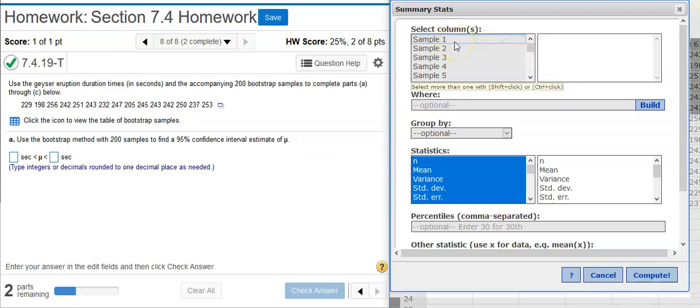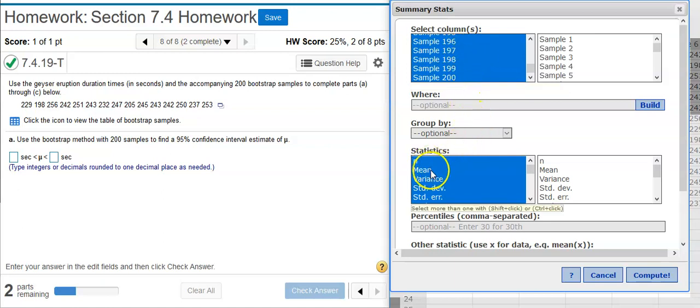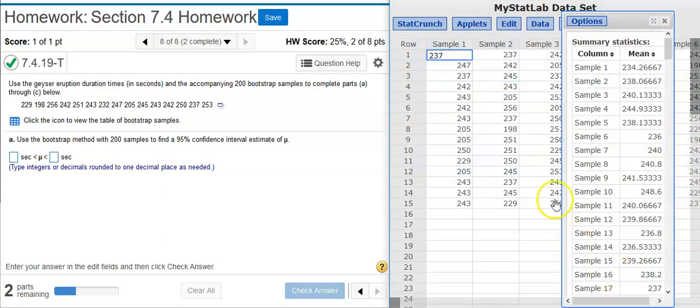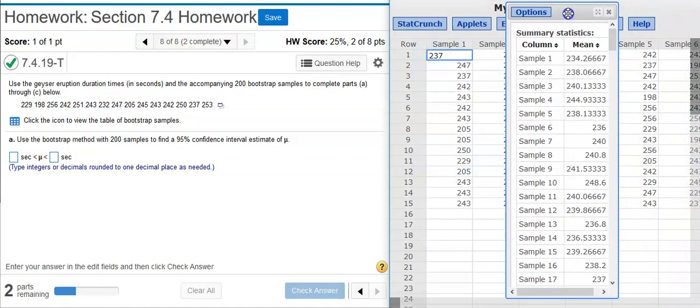Here I'm going to select all the columns that I have. So I select one of them and then on my keyboard, I'm going to select Ctrl-A and that selects all the different samples. I just need the mean, so I'm just going to select just that one to come out. I hit Compute and now here are all 200 mean values for each of the different samples.